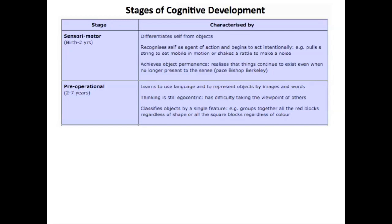The stage after the sensory motor stage is that of pre-operational, which Piaget said is roughly age 2 to 7. Of course, Piaget was not nailing these down in concrete — he gave general ages. In the pre-operational stage, the child learns to use language and to represent objects by images and words. The thinking is egocentric, meaning it is very self-centered, and they have difficulty taking the viewpoint of others. They classify objects by a single feature — grouping all things together regardless of shape, perhaps based upon their color.